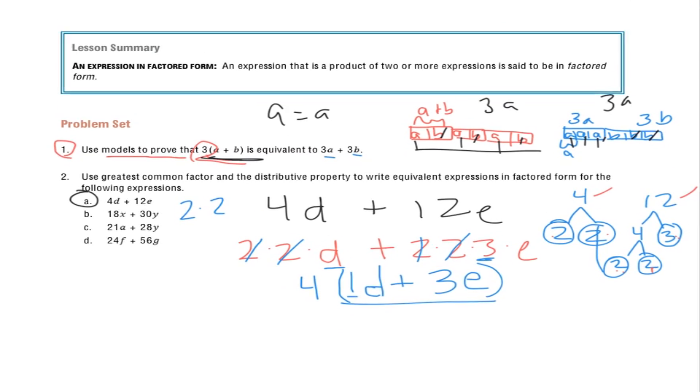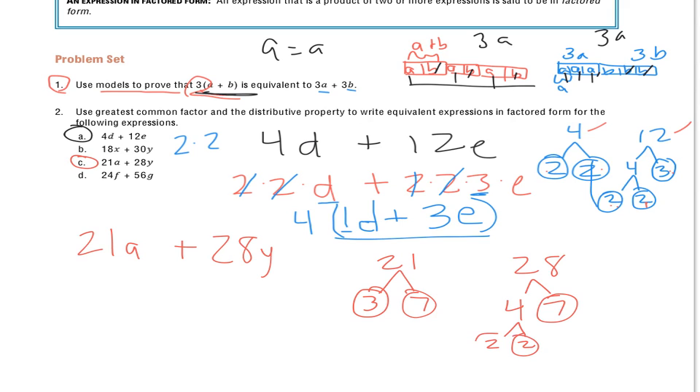So we'll take a real quick look at letter C. 21A plus 28Y, and I'm going to do the same thing. 21 and 28, and I know 21 is 3 times 7, and those are my prime numbers. 28 is 4 and 7, and I've got to break my 4 apart to get my prime numbers. So once I have prime numbers, I'm going to put those back into my expression.